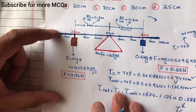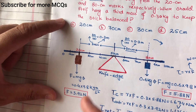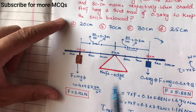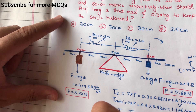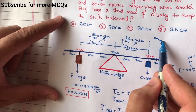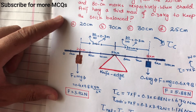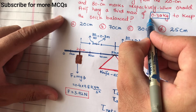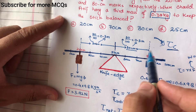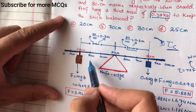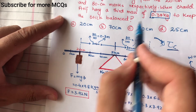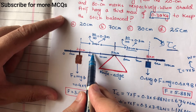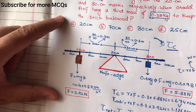یہ rod تب balance ہوگا جب net clockwise torque برابر ہو net anti-clockwise torque کے۔ چونکہ net torque clockwise direction میں ہے، اس لیے ہم 0.3 kg والے mass کو right side میں attach کریں گے تاکہ clockwise torque کو balance کیا جائے — یہ mass anti-clockwise torque produce کرے گا۔ اب ہمیں وہ distance معلوم کرنا ہے جہاں اس mass کو attach کریں۔